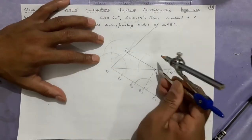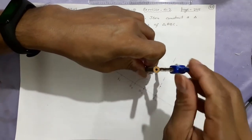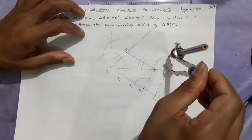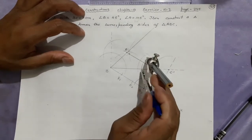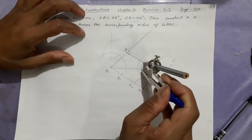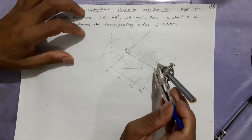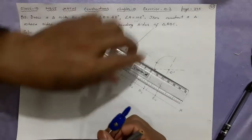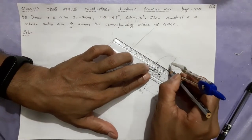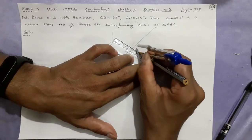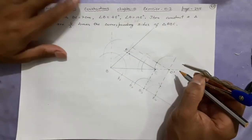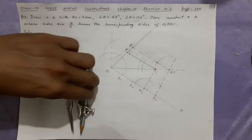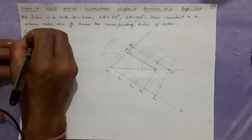Where it cuts will be C dash. Now make an angle at C dash equal to angle BCA — take the arc, take this size, take this size again. The point where this meets AB extended will be A dash. Triangle A dash B C dash is your required triangle.